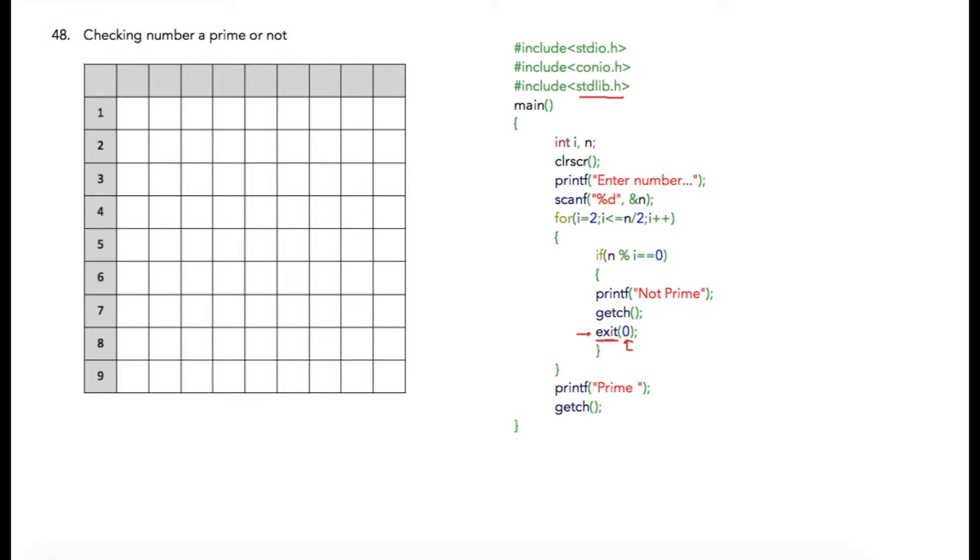Now what is a prime number? We call a number as prime number when that number is divisible by one or itself. So we know that all the numbers are divisible by one. If you want to check six, then six is divisible by two and three, so six is not a prime number.